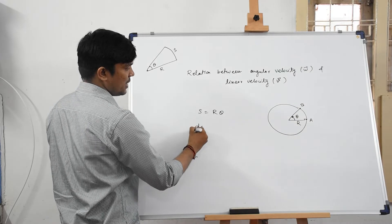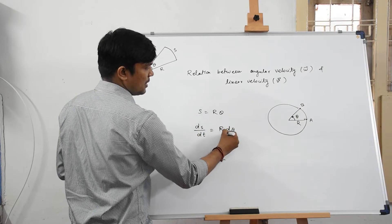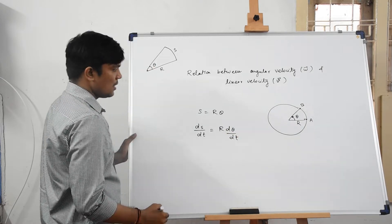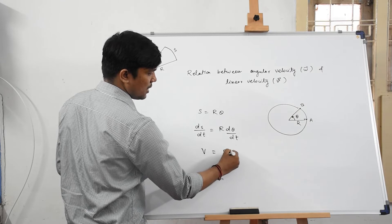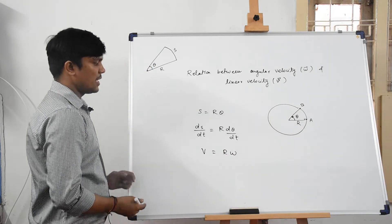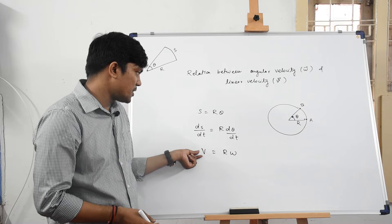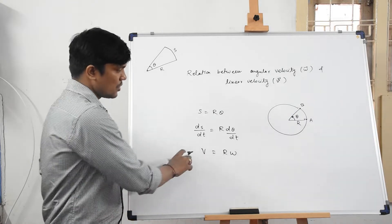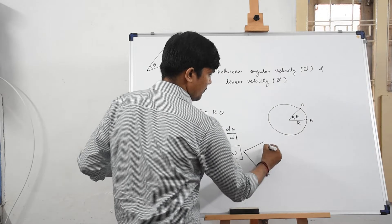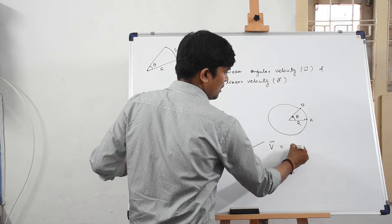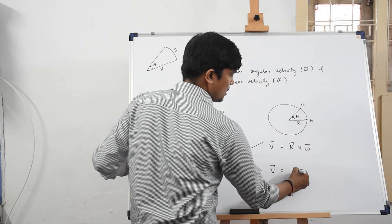From s = r·theta, if you differentiate both sides, you get ds/dt = r · d(theta)/dt. Now ds/dt is velocity, so velocity equals r times omega. But since omega as well as velocity are both vector quantities, we can represent this in two formats.